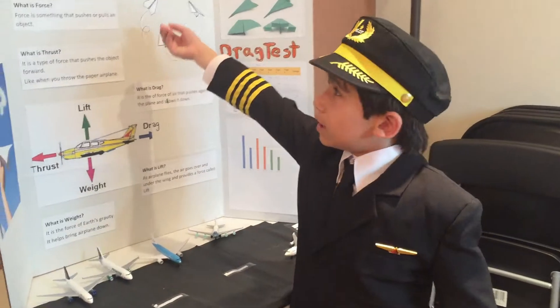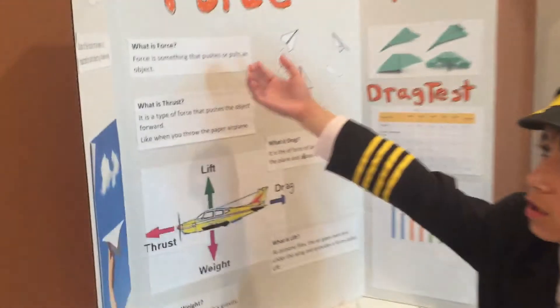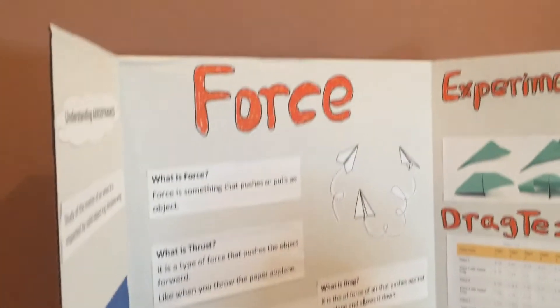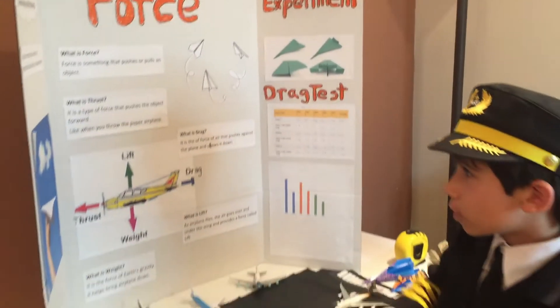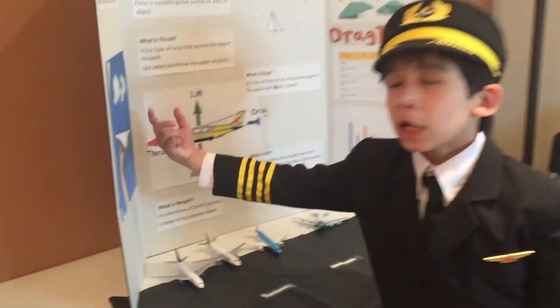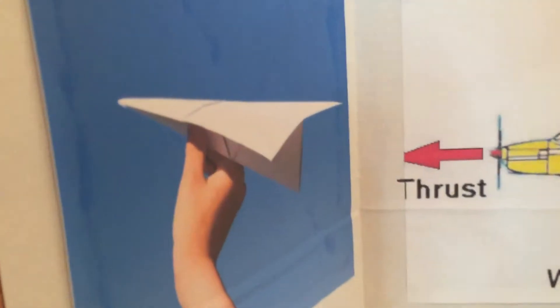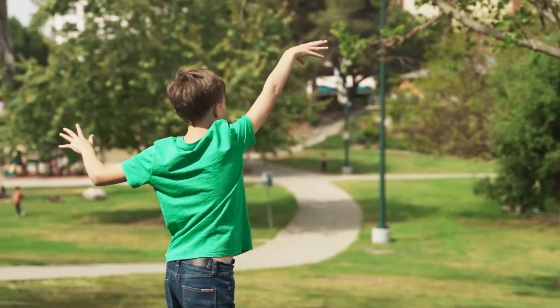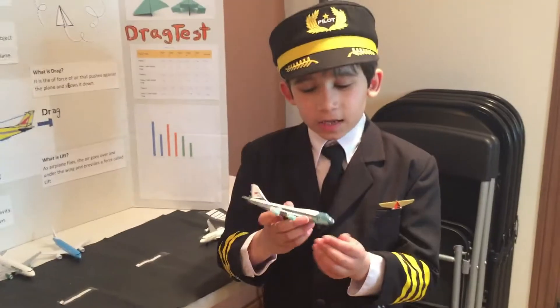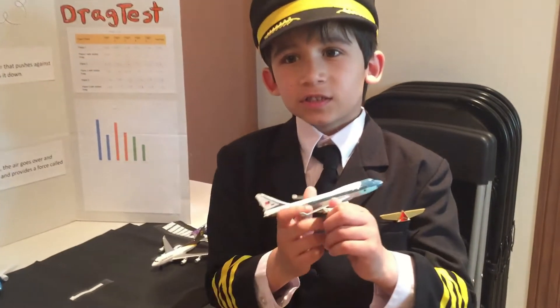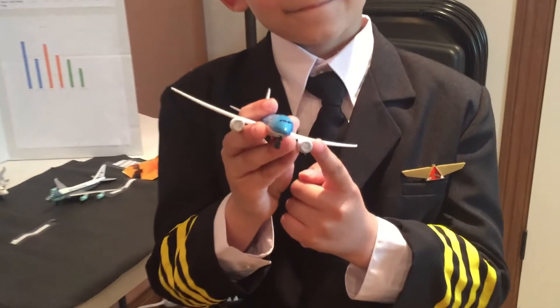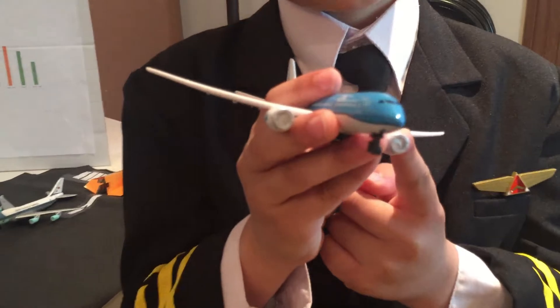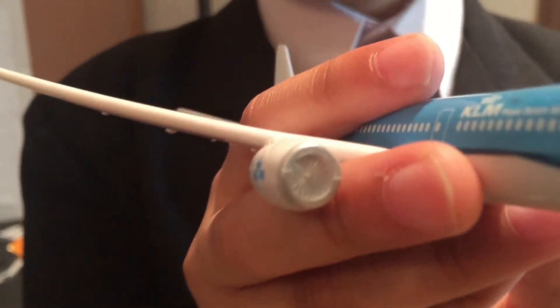What is thrust? Thrust is a type of force that pushes the object forward, like when you throw a paper airplane, just like in this photo. And look at this airplane's engines — this also provides thrust.